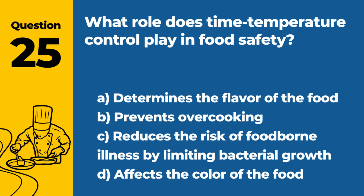Question 25. What role does time temperature control play in food safety? a. Determines the flavor of the food. b. Prevents overcooking. c. Reduces the risk of foodborne illness by limiting bacterial growth. d. Affects the color of the food. Answer c. Reduces the risk of foodborne illness by limiting bacterial growth. Time temperature control plays a crucial role in food safety by reducing the risk of foodborne illness through limiting the time food spends in the temperature danger zone where bacterial growth occurs.